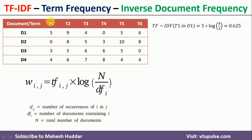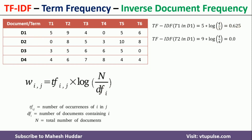Let's calculate the TF-IDF of T1 in D1. The term frequency is 5. N is 4 (total documents). T1 is present in 3 out of 4 documents, so DF = 3. Therefore: TF-IDF = 5 × log(4/3) = 0.625.